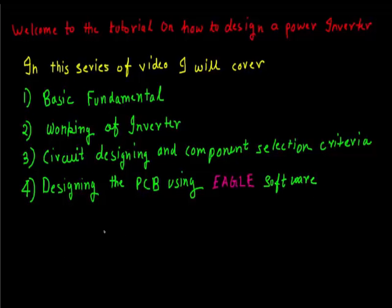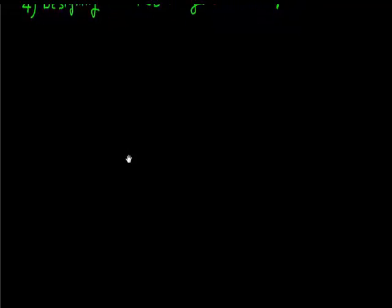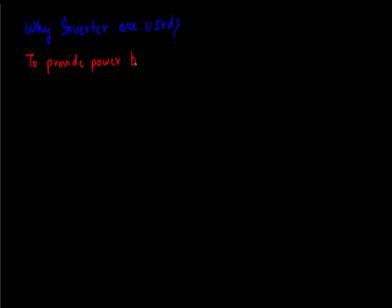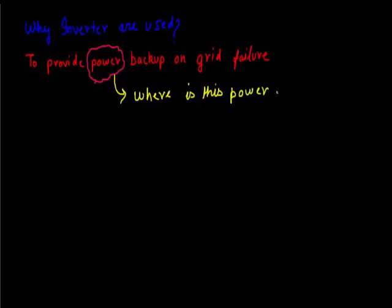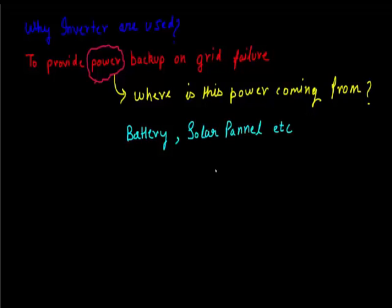As I promised, I would start from very basics. So the first question that might come in your mind is why inverters are used. It's very simple, inverters are used to provide a power backup on grid failure. Now where is this power coming from? In most cases this power would be delivered by a battery pack or a solar panel or some other DC sources.